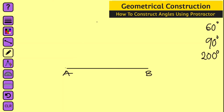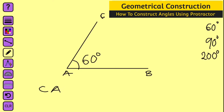Next, remove your protractor and use your ruler to connect the dot and the origin, which is point A. This angle right here is 60 degrees. Let me call this point C — therefore angle CAB is equal to 60 degrees.